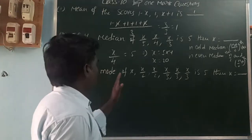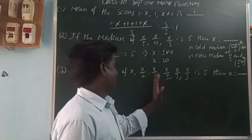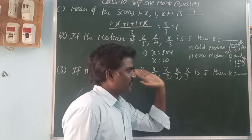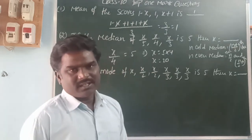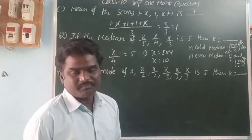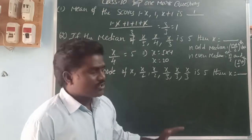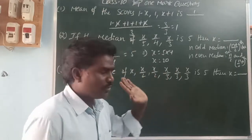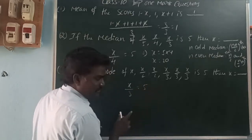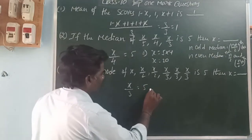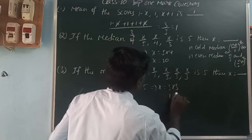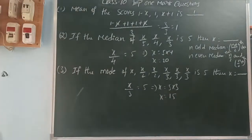Next: the mode of x, x/2, x/2, x/3, x/3, x/3 is 5. Mode means the observation with the highest frequency — the most occurring value. Here x/3 appears most, so x/3 equals 5, which gives x equals 5 times 3, that is 15.